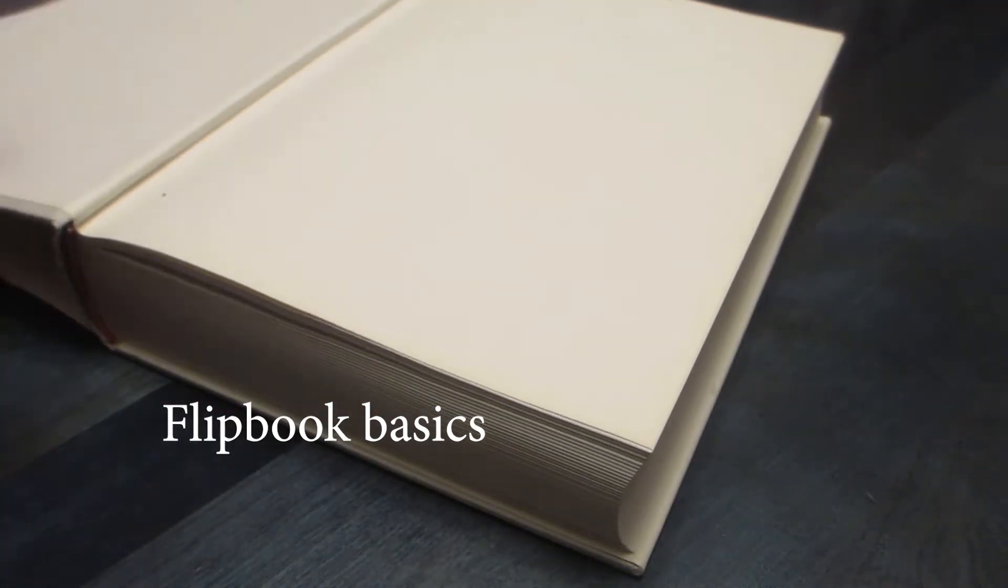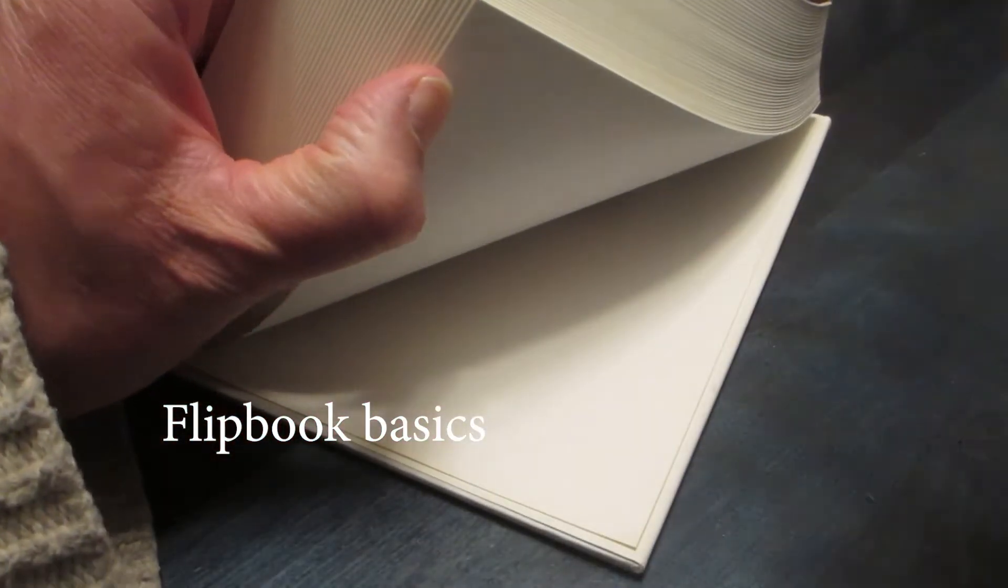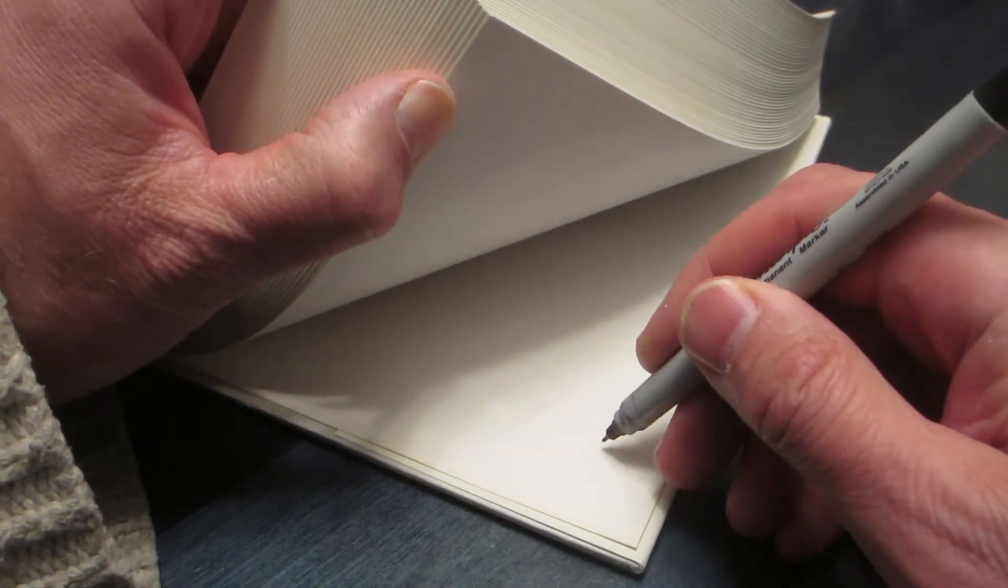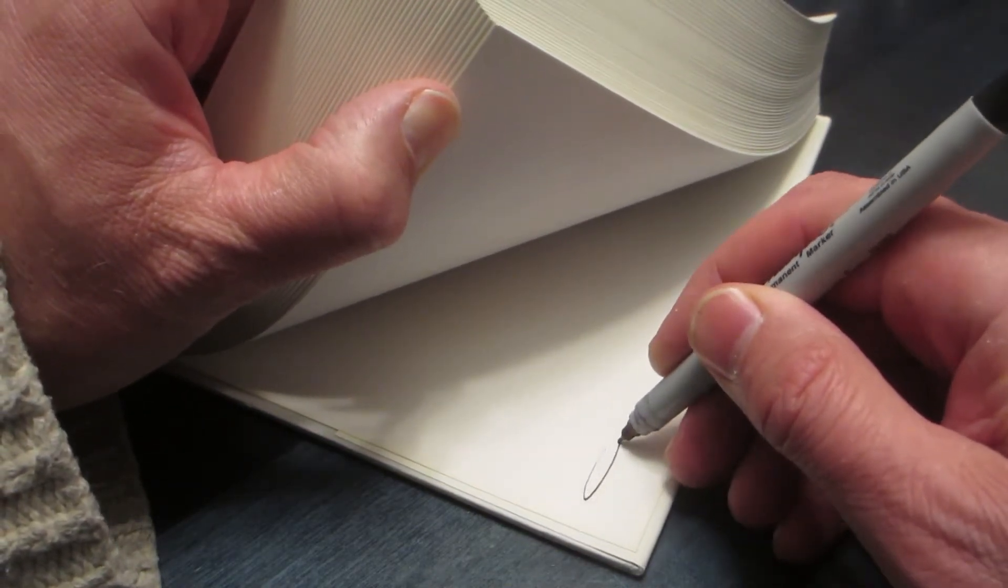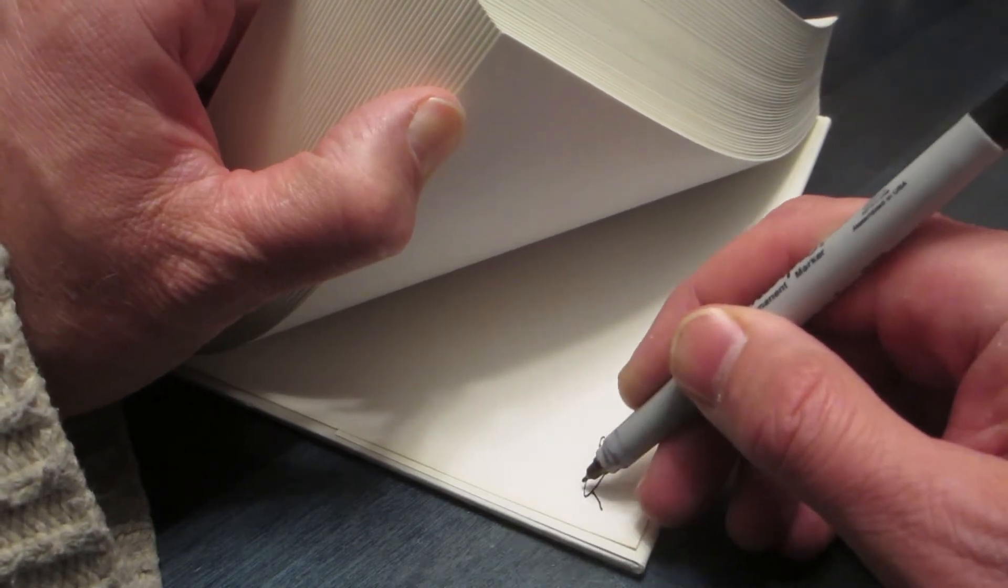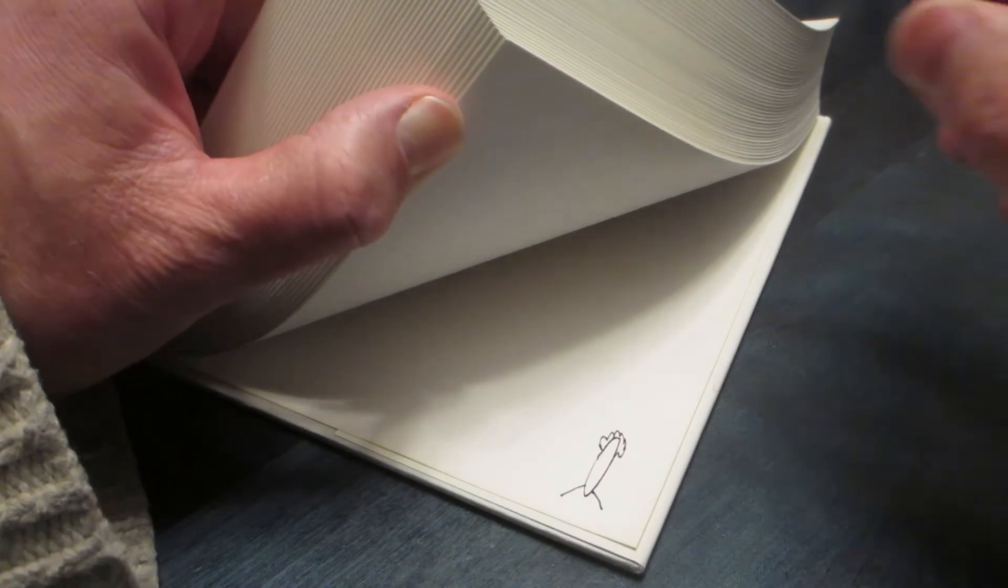So here we go. We'll take a book. Now we start at the end. Let's have a little skinny something or other. We'll draw something like that there.